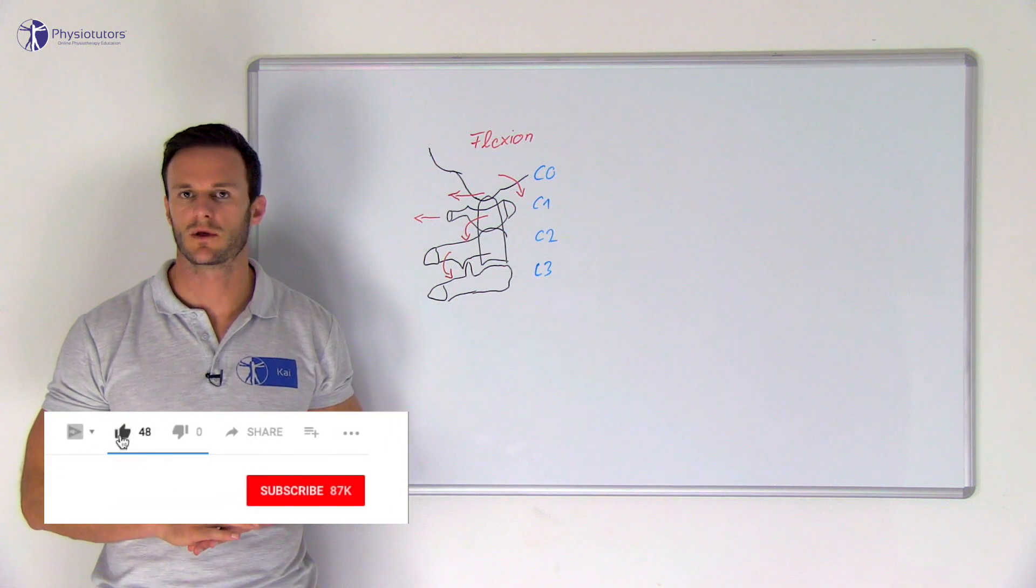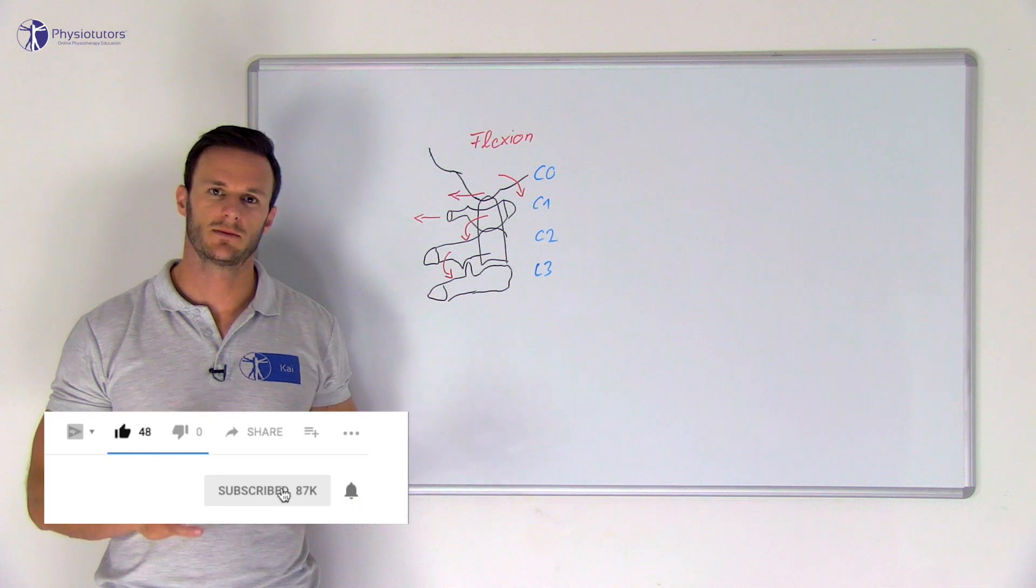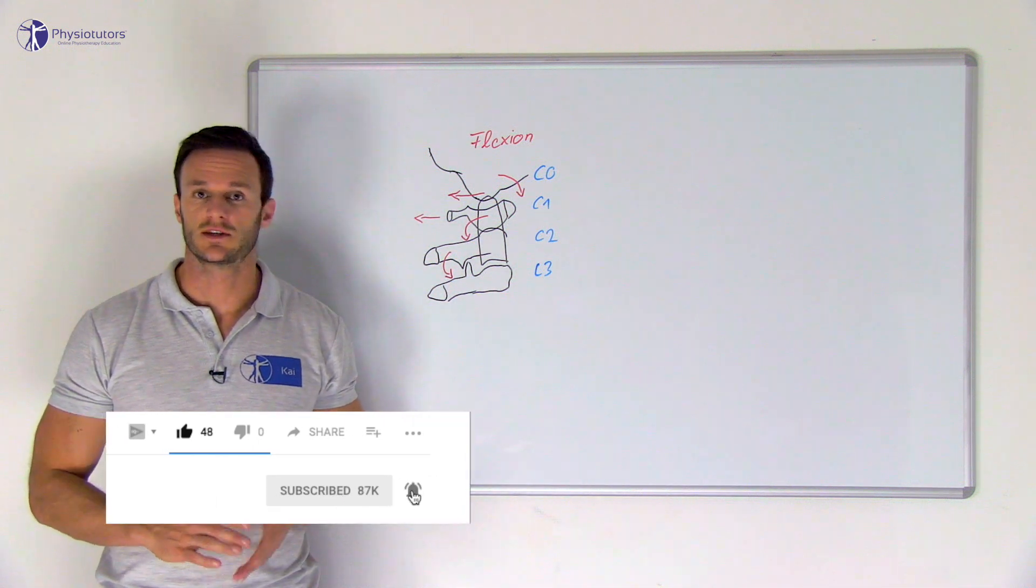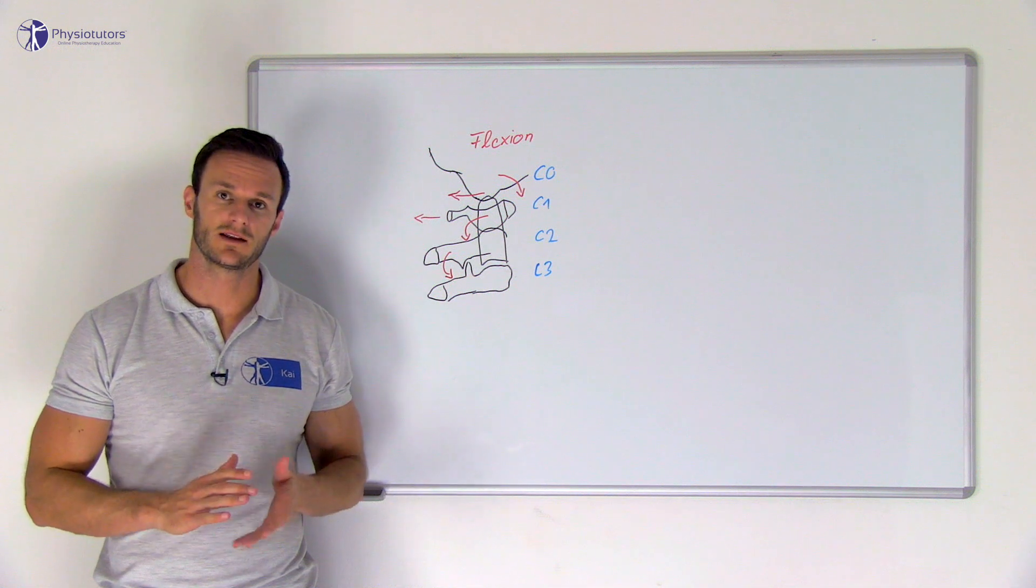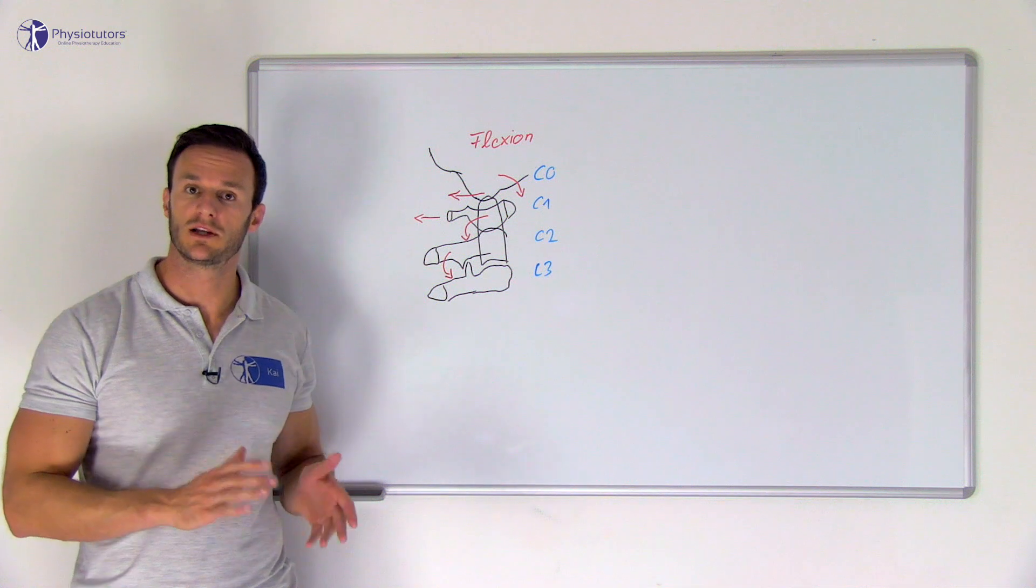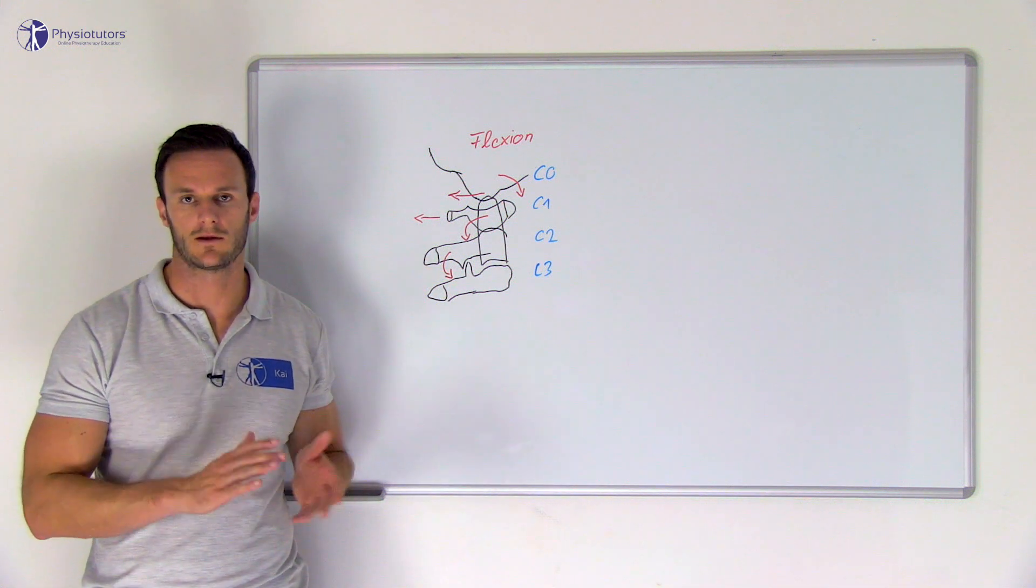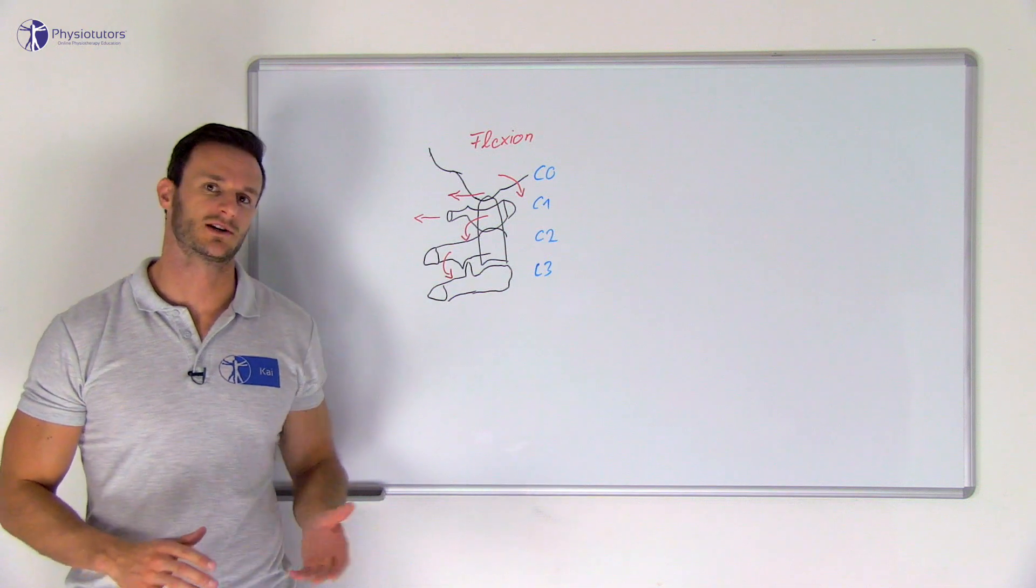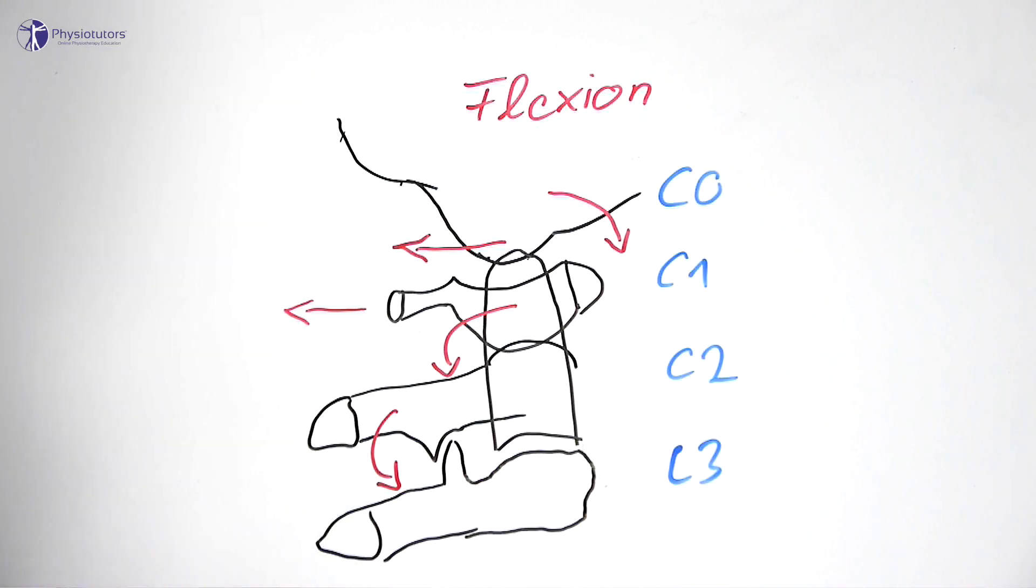The fixation of C3 is different from the common literature which describes a fixation of C2. The problem with a fixation of C2 is that we are preventing the dens of C2 from tilting backwards, and thus from pinching the dura mater or the myelum. The upper cervical flexion test, however, is a provocation test.